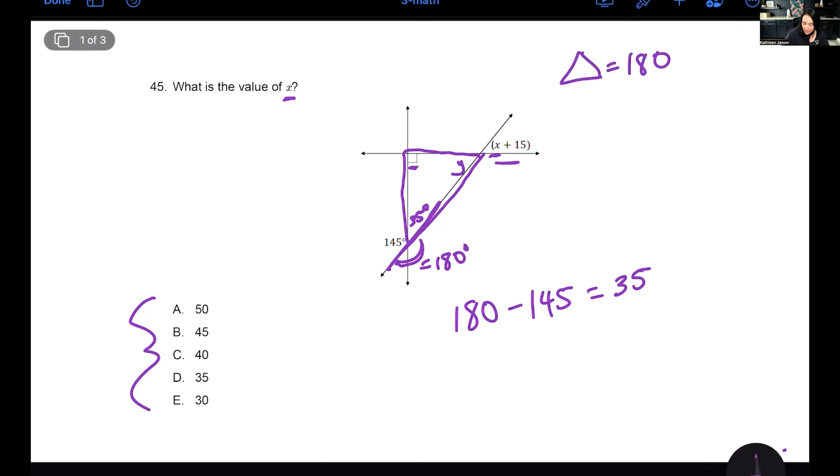So this angle here is going to be 35 degrees. Now I have a triangle. This right here now makes a triangle. So not only do I need to understand supplementary angles equal 180 and a straight line equals 180, now I can use what I know about triangles to figure out this angle here.